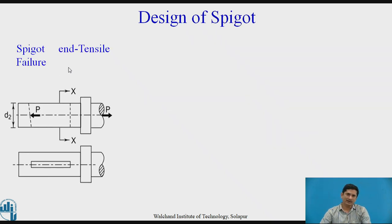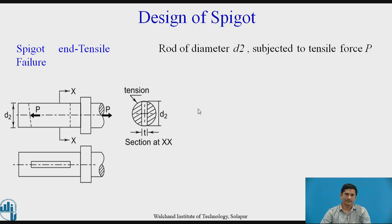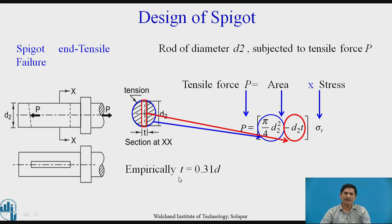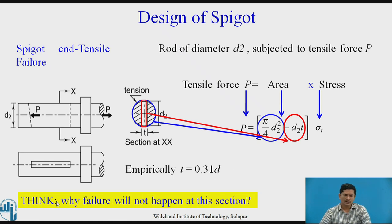Next is spigot end under tension. This spigot is under tension. You can see that section XX is the weak section. The rod of diameter D2 is subjected to tensile force P. This rod is of diameter D2. Let us write the equation for the failure by the classical equation. Force equals area π/4 D2² is the total area minus I need to deduct this vertical zone because there is no material D2T multiplied by the stress. This I need to deduct - second part. I can get the total area. We can use T = 0.31 times D which is the empirical relation. Think upon why the failure will not happen at this section.